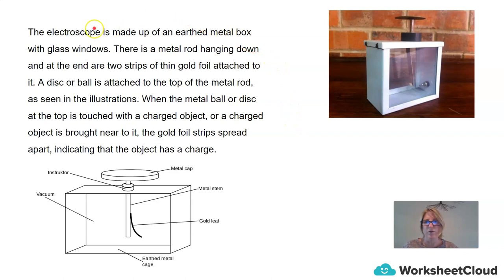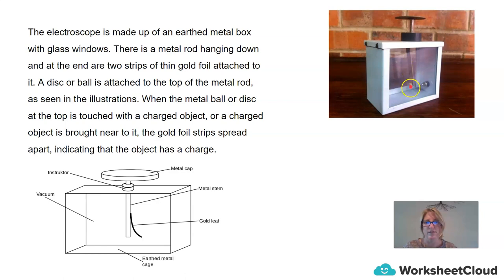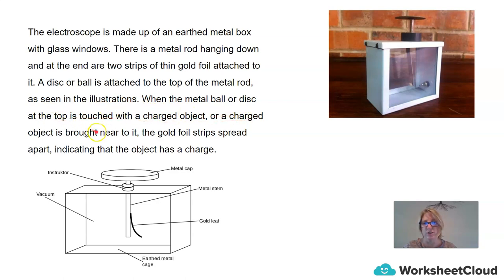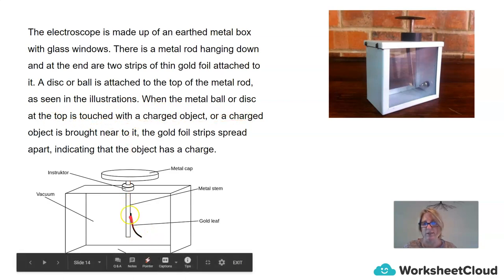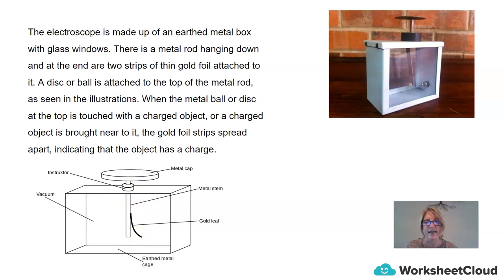Just a reminder: the electroscope is made up of an earthed metal box with glass windows, allowing us to look in and see the metal rod hanging down. At the end, it has fine strips of gold leaves attached to the metal rod. It has a disc or ball at the top of the metal rod, along with an insulating disc. When the metal ball or disc at the top is touched with a charged object, or a charged object is brought near it, the gold foil strips spread apart, indicating that the object being brought closer has a charge.